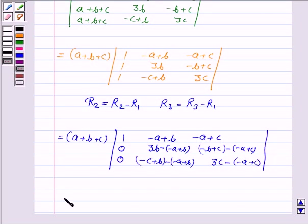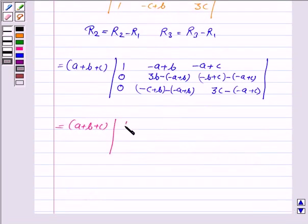This simplifies to 0, a plus 2b, a minus b, 0, a minus c, and a plus 2c.